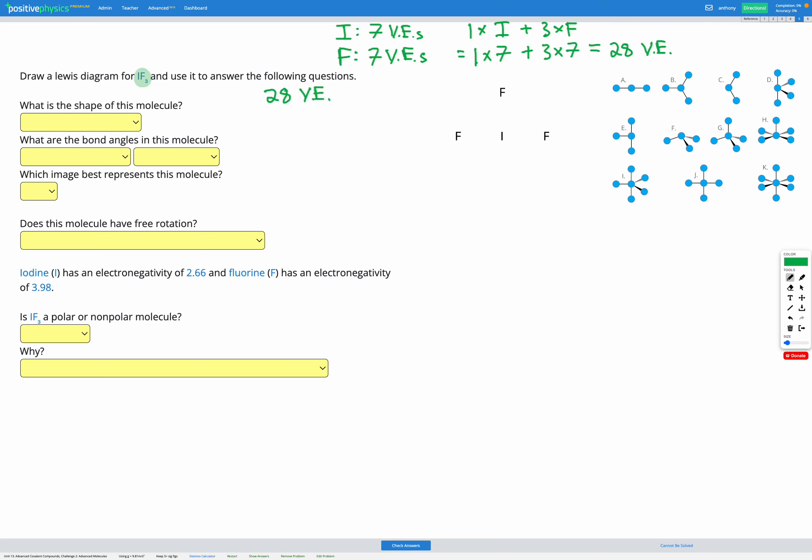Our next step in drawing our Lewis diagram is to draw single bonds joining up our atoms. So I'm going to add a single bond between each of the fluorines and the iodine. Three single bonds uses up 6 electrons in total, leaving me with 22 valence electrons remaining.